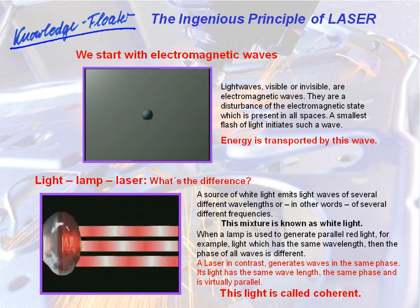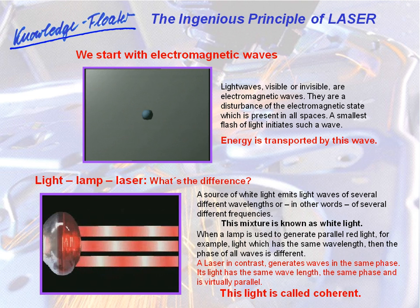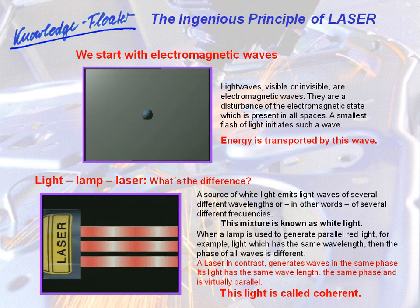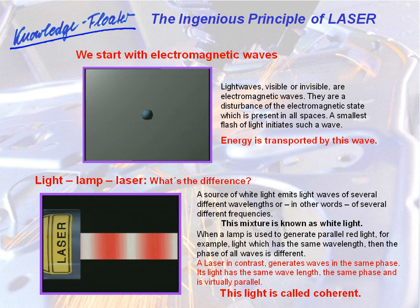When a lamp is used to generate parallel red light, for example, light which has the same wavelength, then the phase of all waves is different. A laser, in contrast, generates waves in the same phase. Its light has the same wavelength, the same phase, and is virtually parallel. This light is called coherent.